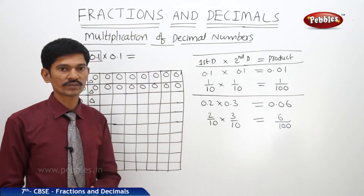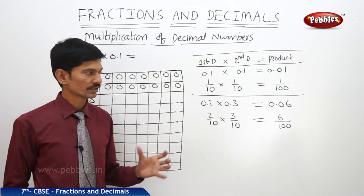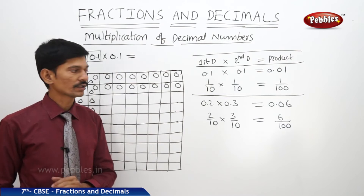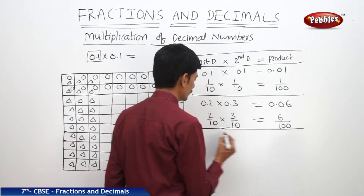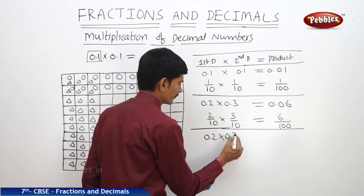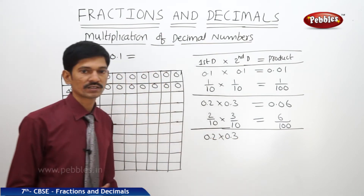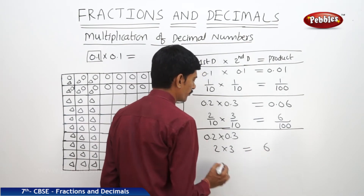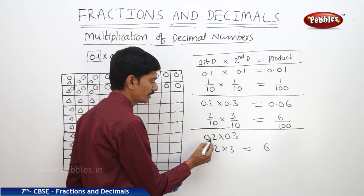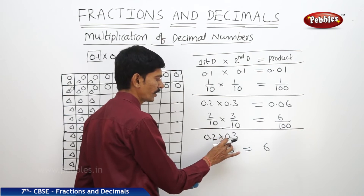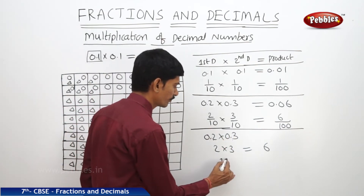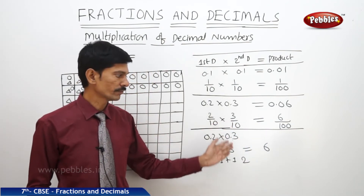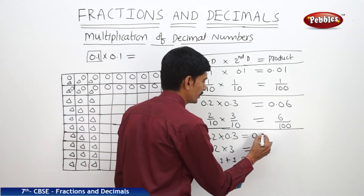But this pictorial representation for finding the product of two decimal numbers is time consuming. So, how to multiply any decimal numbers without using pictorial representation? We will find the product of 0.2 and 0.3 by first multiplying these two decimal numbers ignoring the decimal point — just 2 by 3 gives product 6. In the first decimal number, there is 1 digit after the decimal point. In the second decimal number, there is also 1 digit. So, 1 plus 1 — there will be 2 digits after the decimal point in the product. So, we write the product as 0.06.